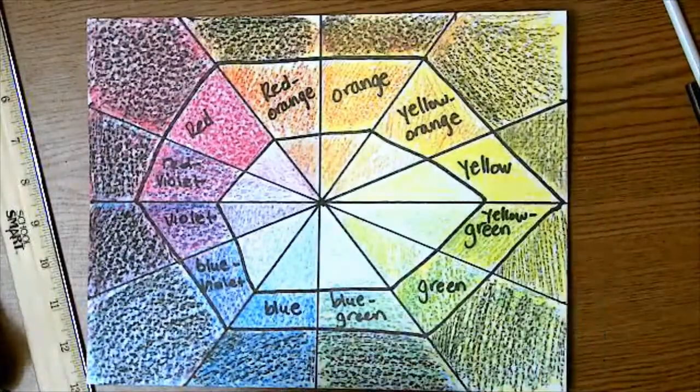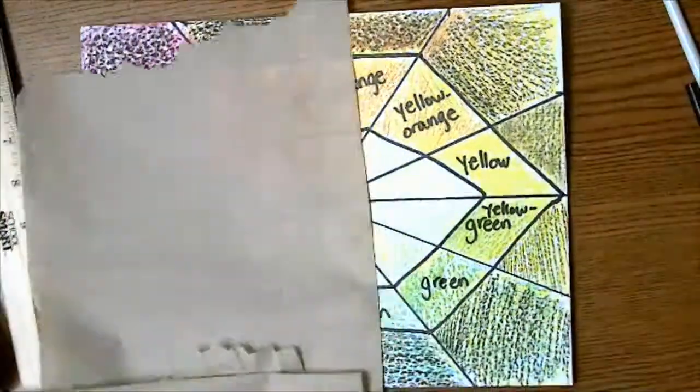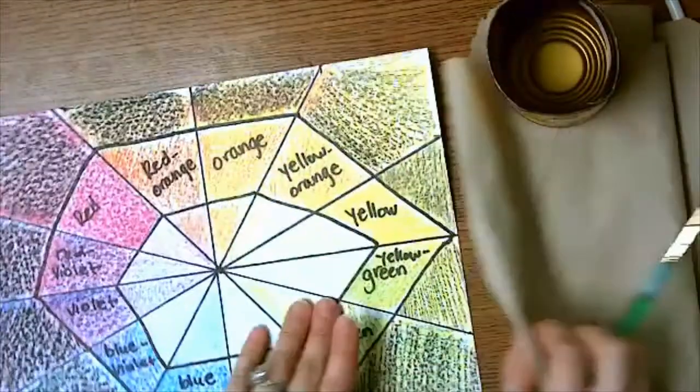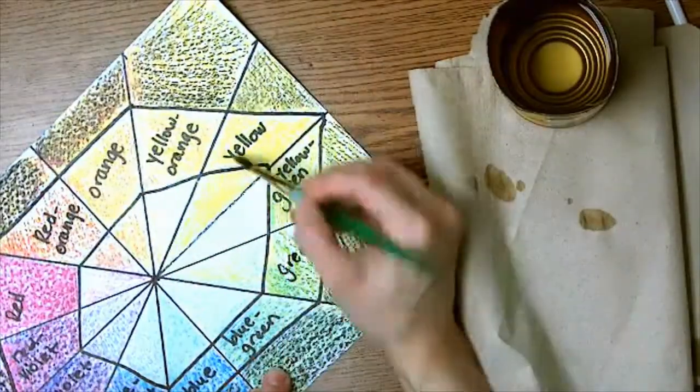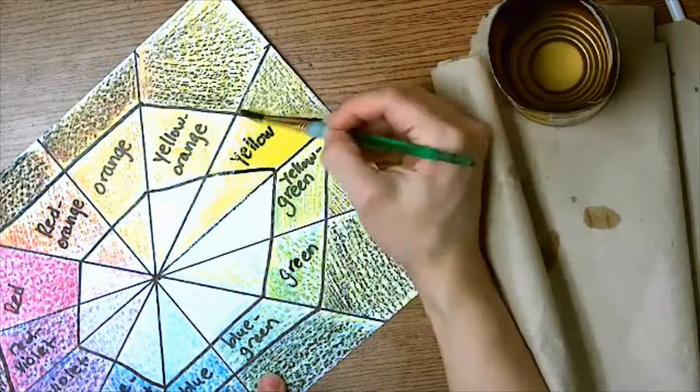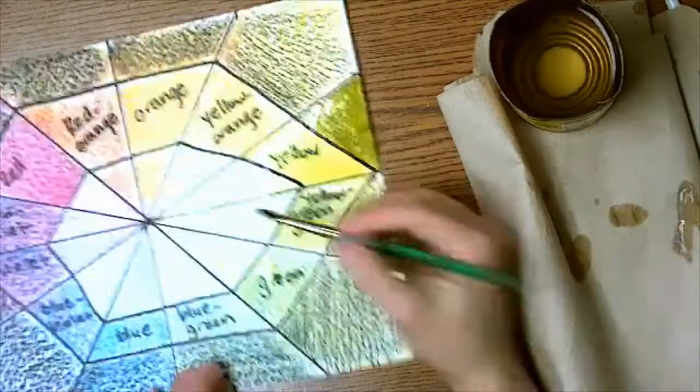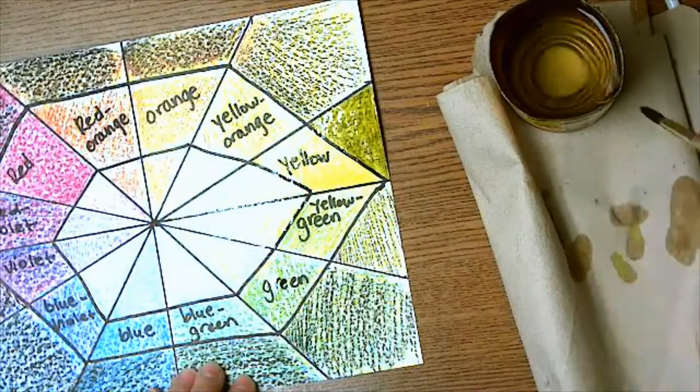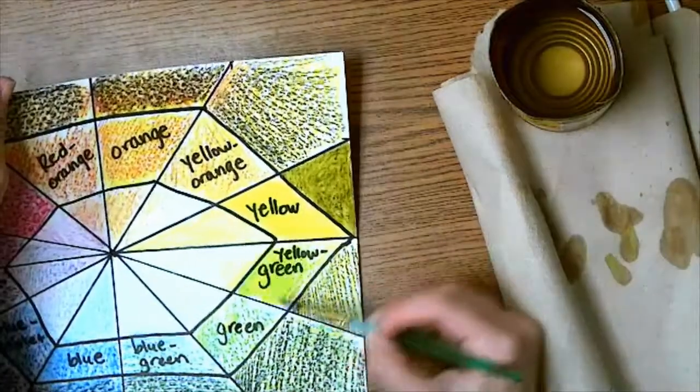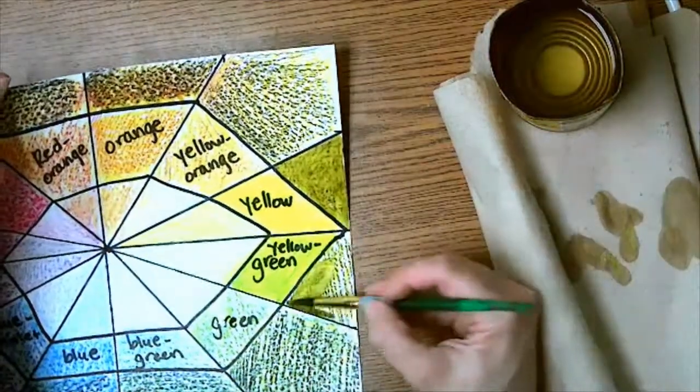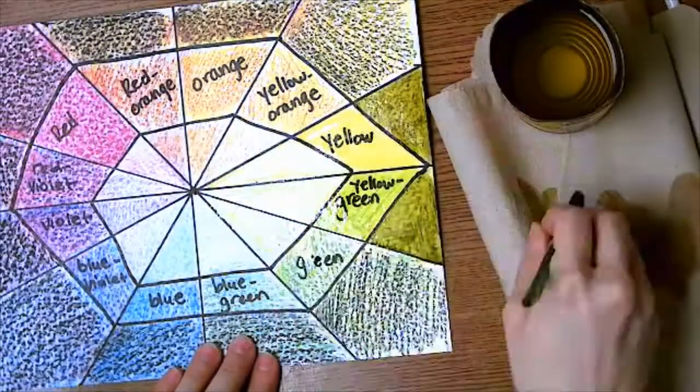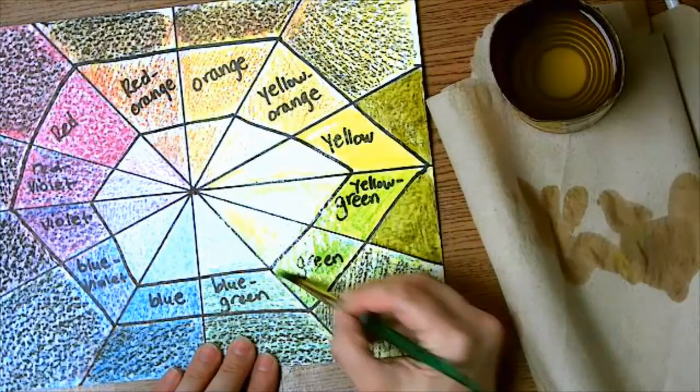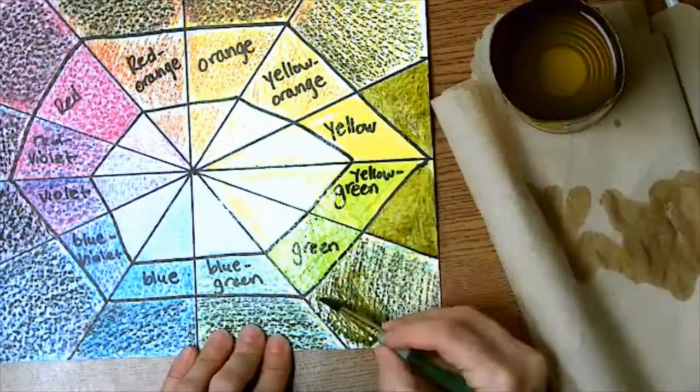So this is what it should look like at this point. Now here comes the magic. You're going to get a paper towel, a can of water, and a paint brush, and you're going to use the water to blend these colors together. Because we're using watercolor colored pencils, it's going to blend all of those lines together, and hopefully you filled them in really nice and even so it'll be easy to blend.